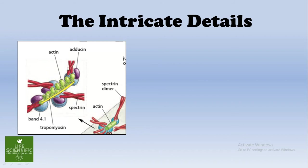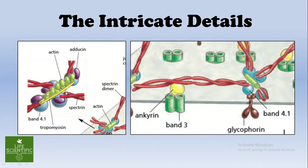The spectrins join with each other at the junctional complex, which provides stability to the whole system. In the second picture, ankyrin (the yellow one) and band 3 (the green one) are binding to the spectrin. On the right, glycophorin binds to the junctional complex and provides much needed stability.